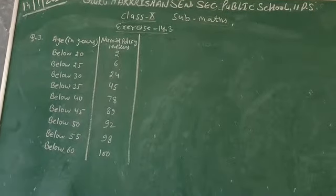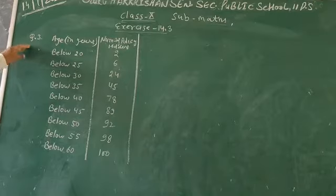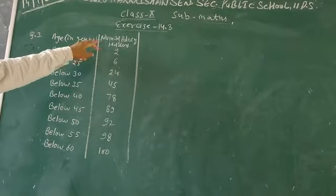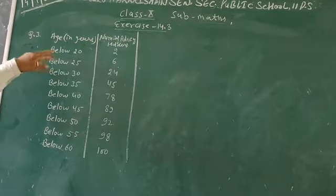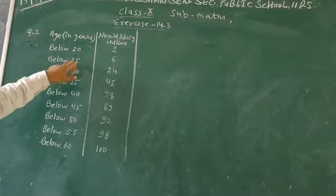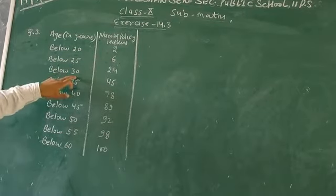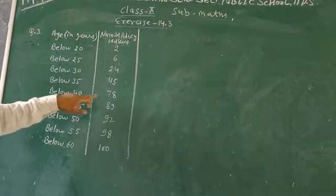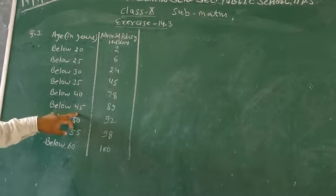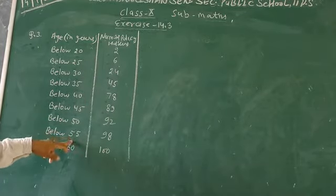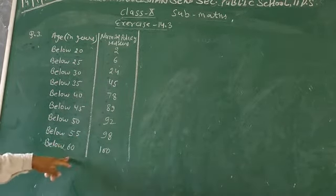In question 40.3, this frequency table we have given as cumulative frequency. Number of policies ordered: below 20 is 2, below 25 is 6, below 30 is 24, below 35 is 45, below 40 is 78, below 45 is 89, below 50 is 92, below 55 is 98, below 60 is 100.